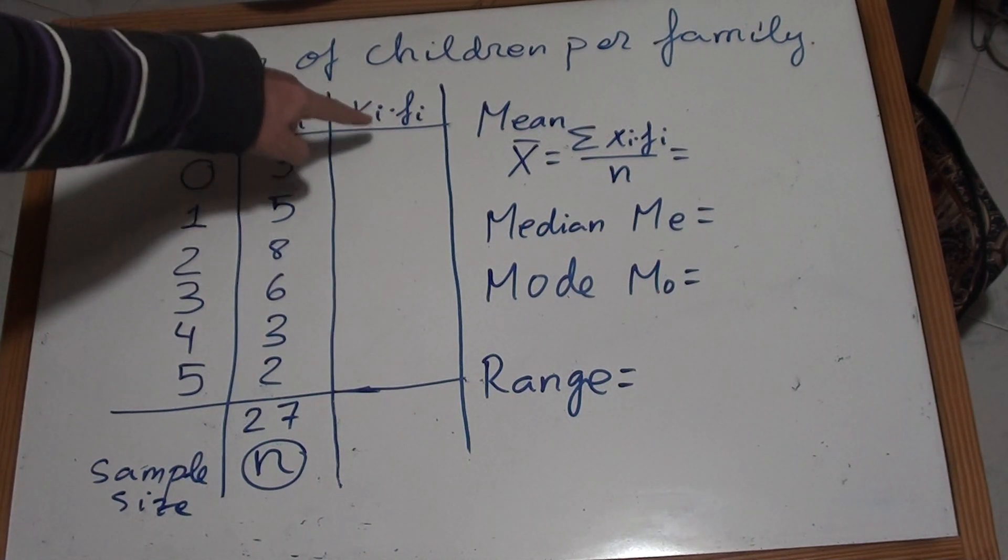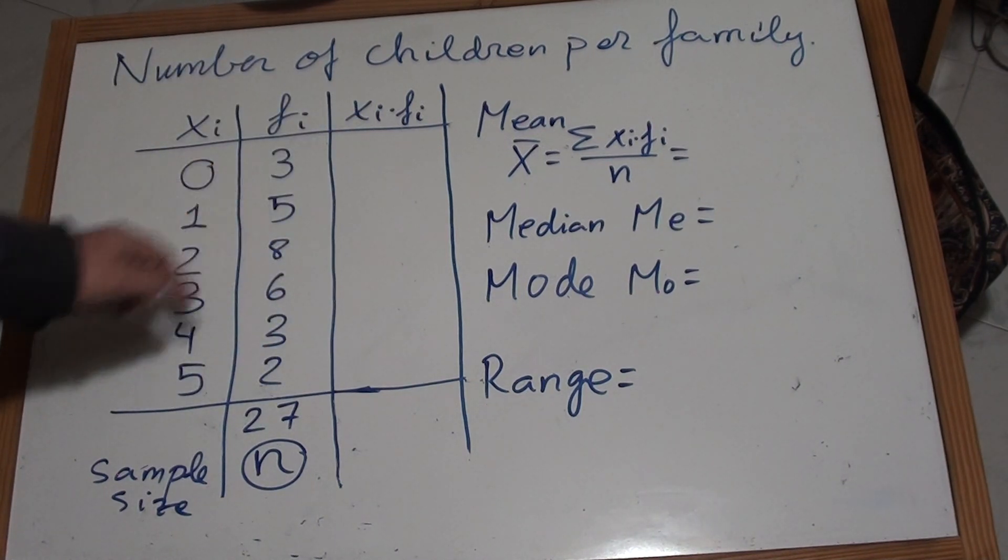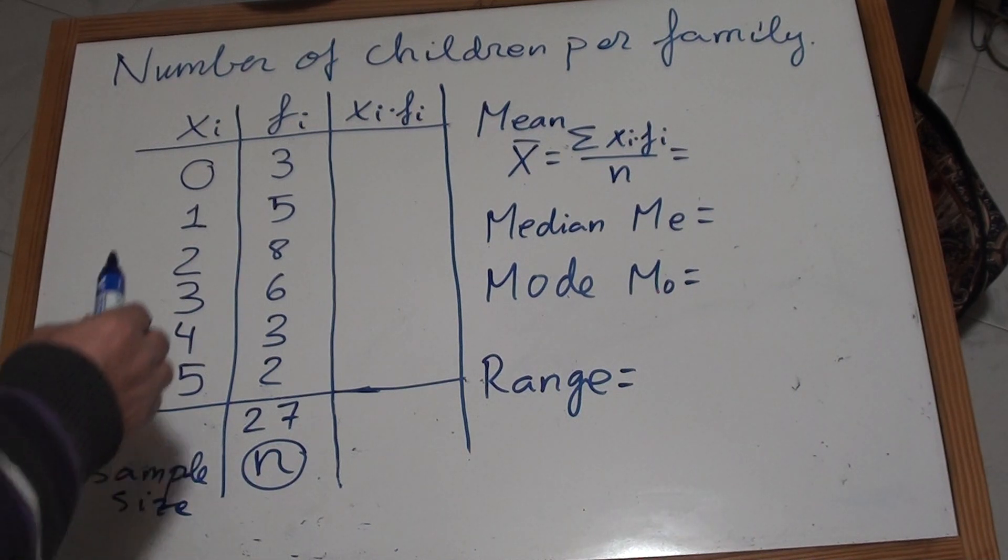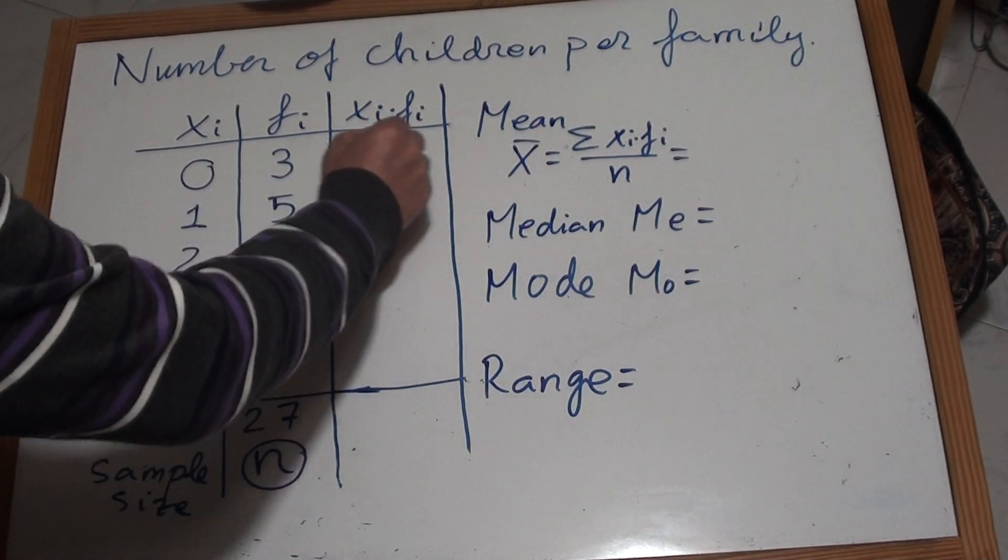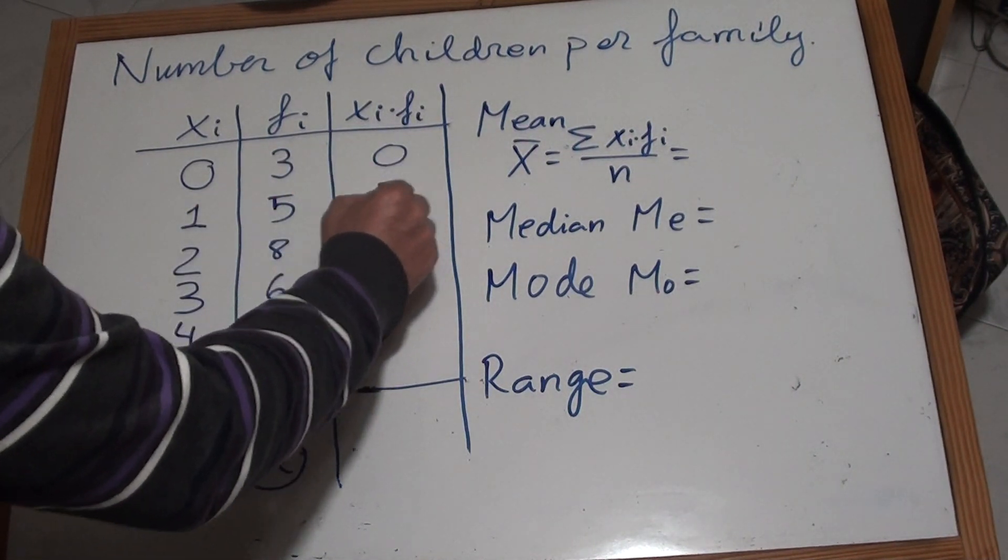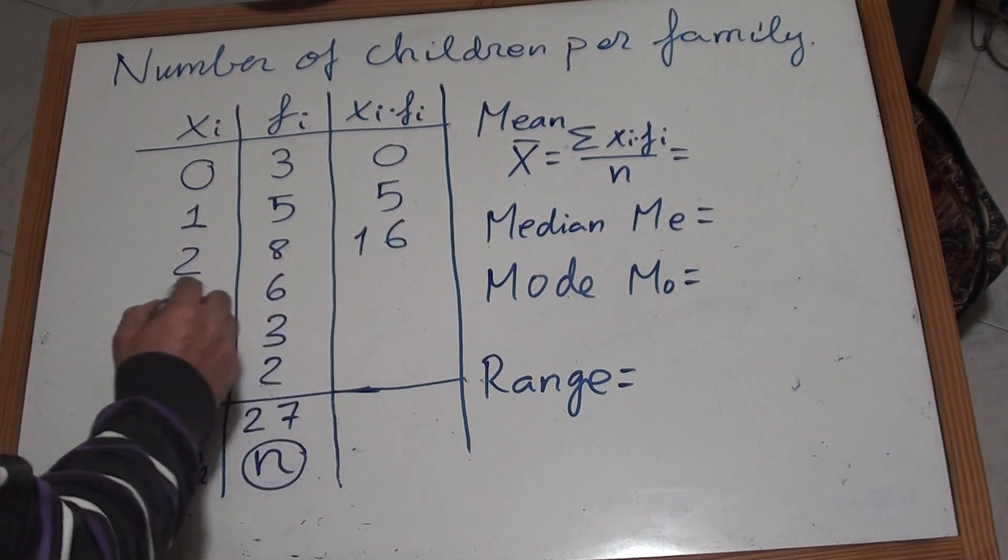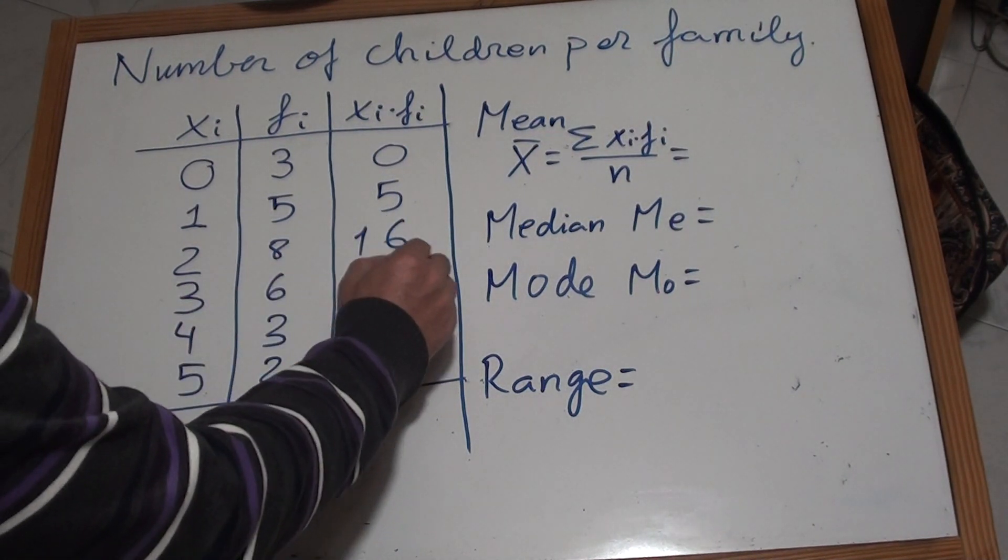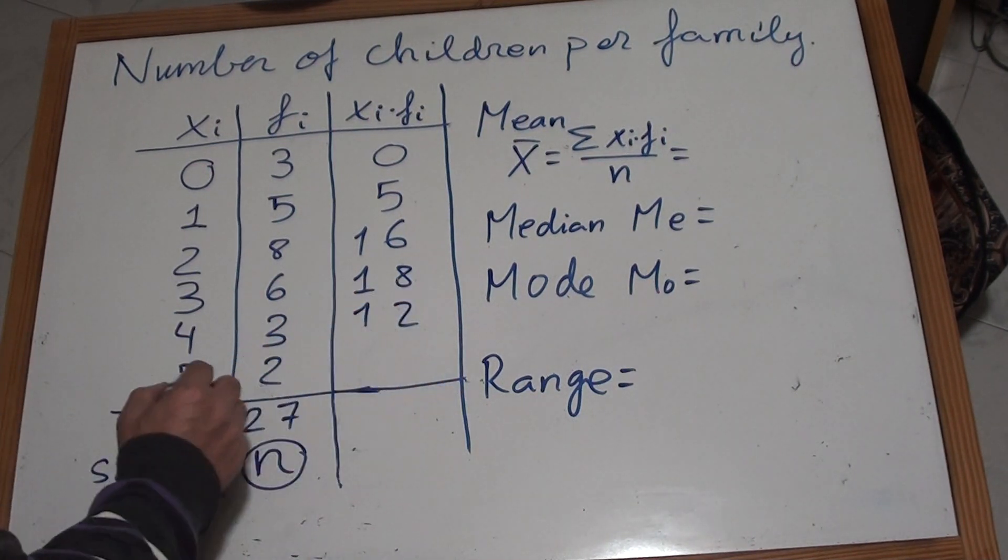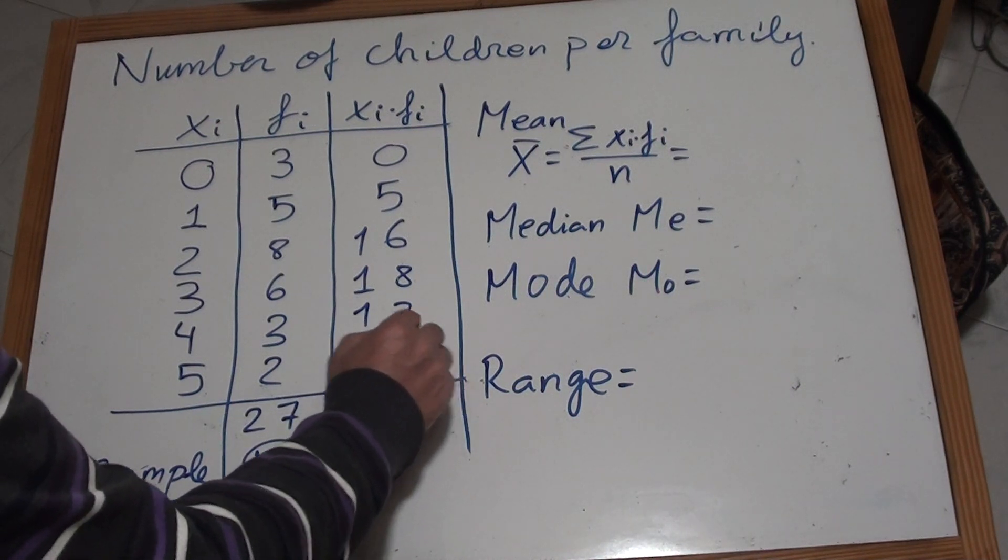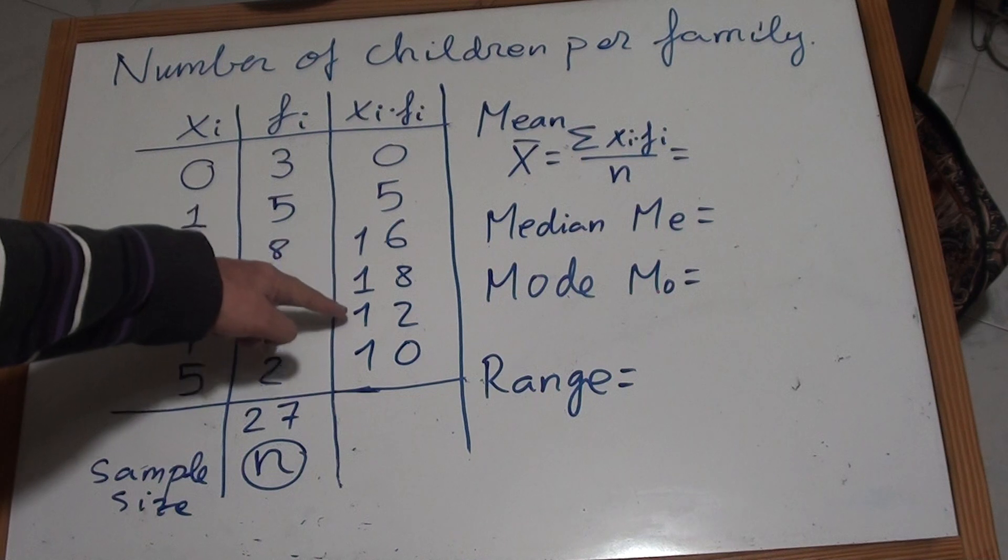Now we are going to find another column which is the data multiplied by the frequency. So we simply multiply: 0 × 3 is 0, 1 × 5 is 5, 2 × 8 is 16, 3 × 6 is 18, 4 × 3 is 12, 5 × 2 is 10, and we add all these numbers in the column.